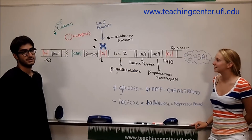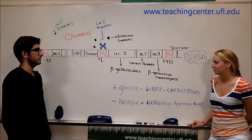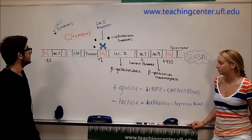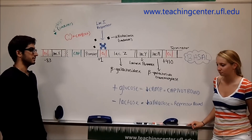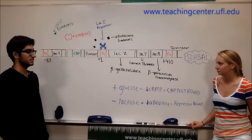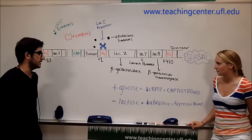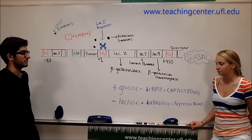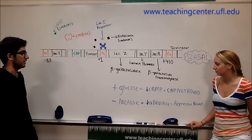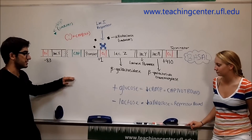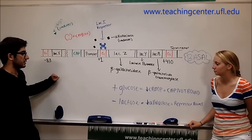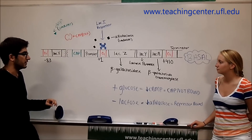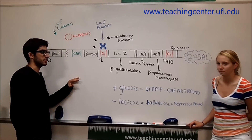What we have drawn here is the lac operon at basal levels of transcription. E. coli preferentially uses glucose, not lactose, but it will use lactose if glucose is not present. In this case, what we're describing here is glucose is present and lactose isn't, so this is what normally happens in E. coli.